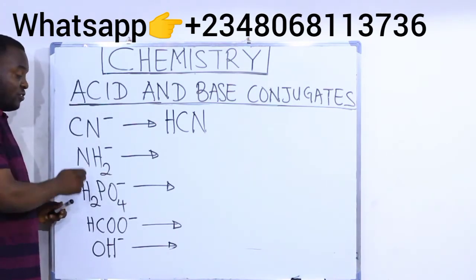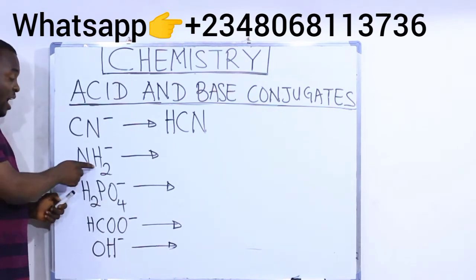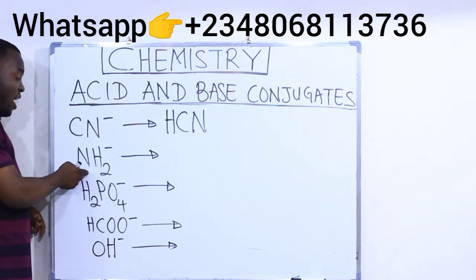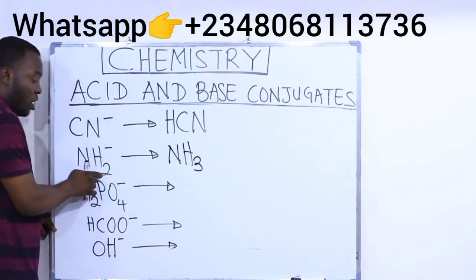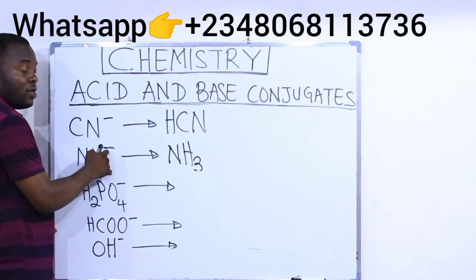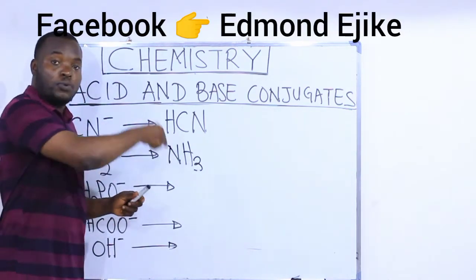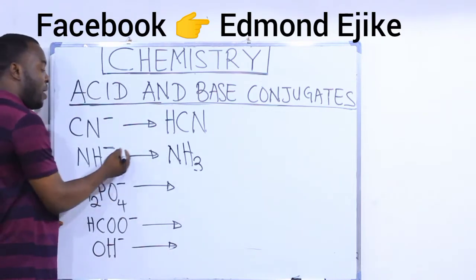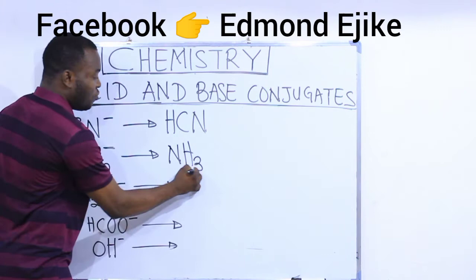To find the conjugate acid of this, all I need to do is add one H to this. I have two H here already. If I add one H, it will become NH3. That is two H. That is two here plus the new one I will add. That is three. There is a minus charge here. Remember, after adding your H, you also add a plus charge. So by the time I add my plus charge on this, the plus charge will cancel this minus. So this is my answer.